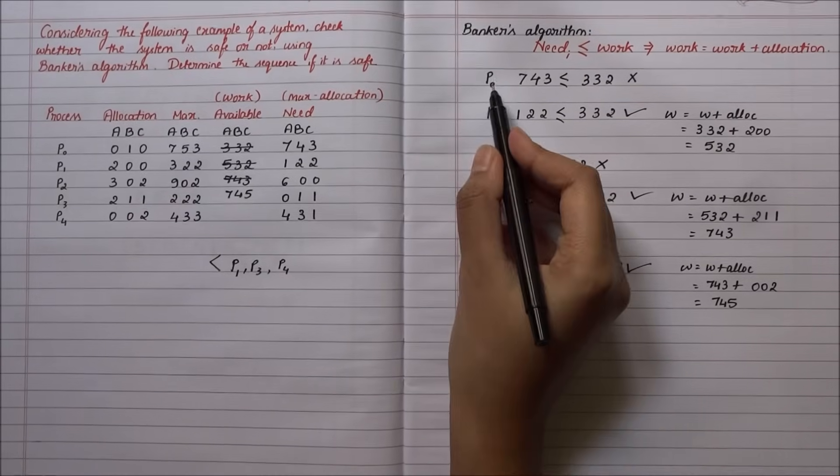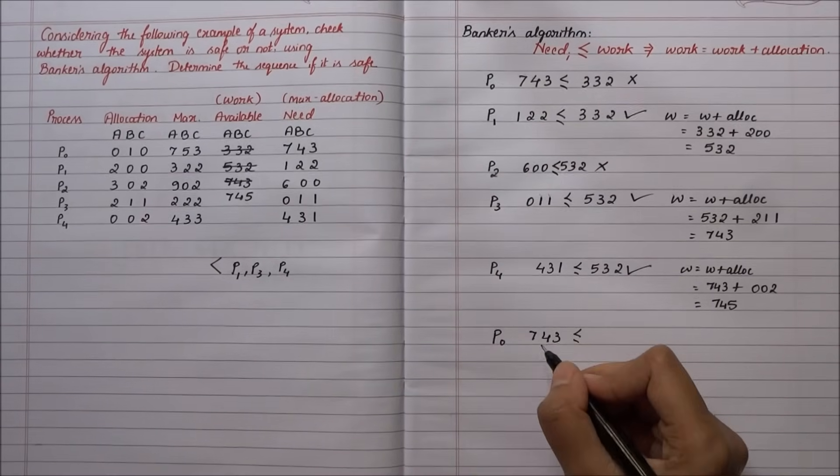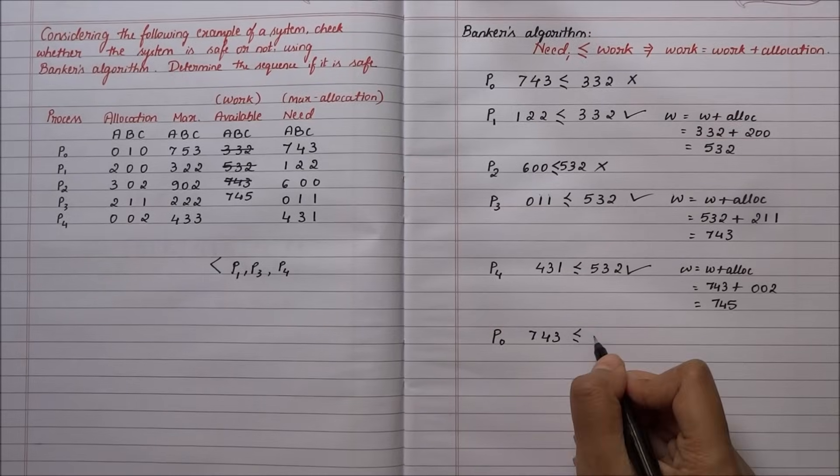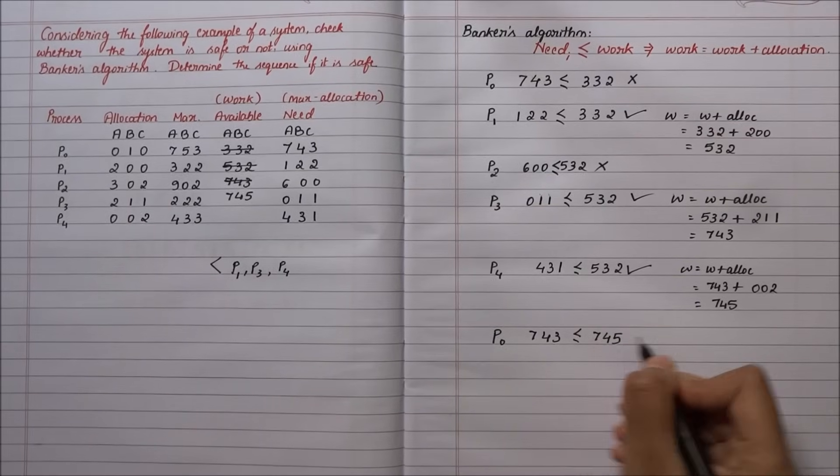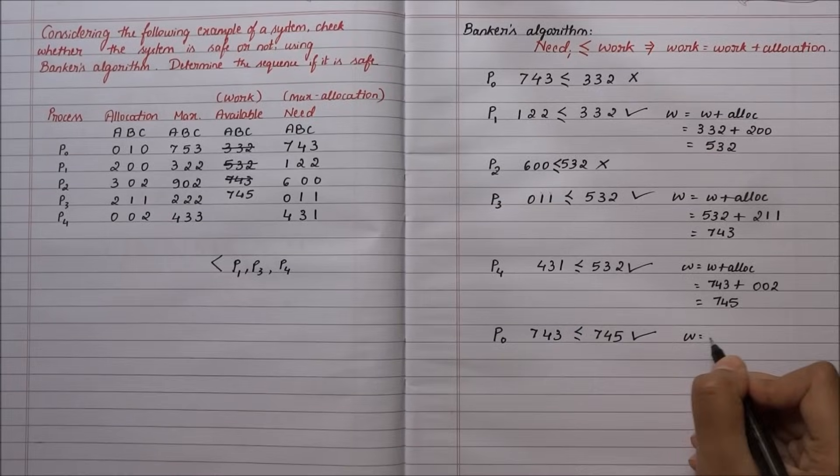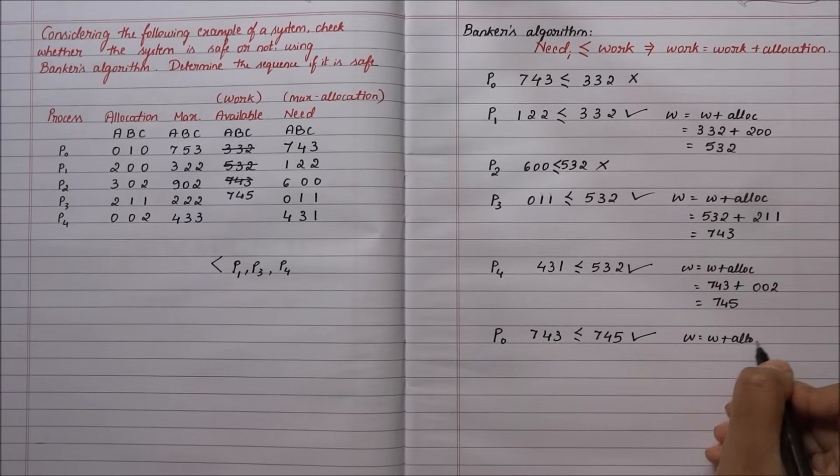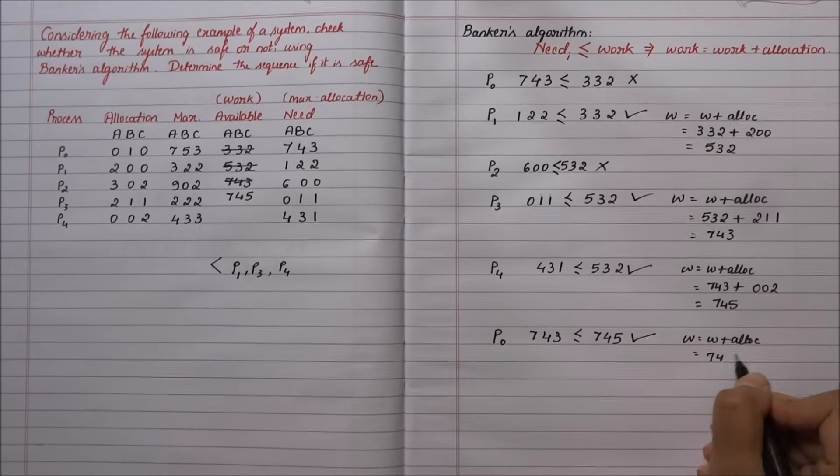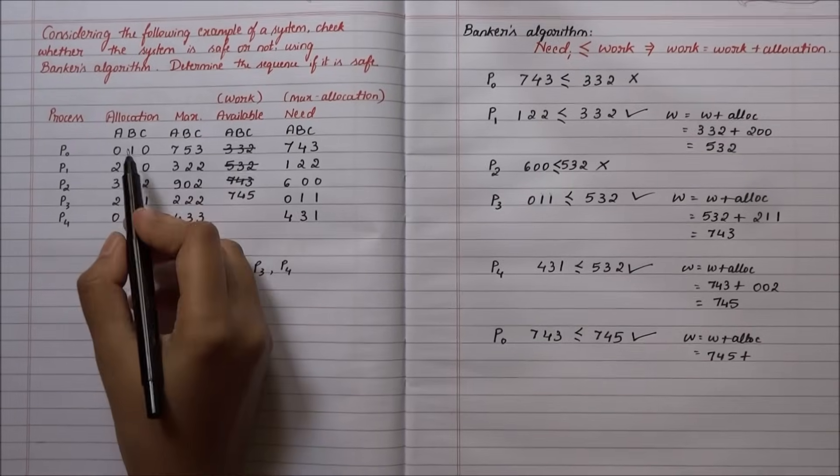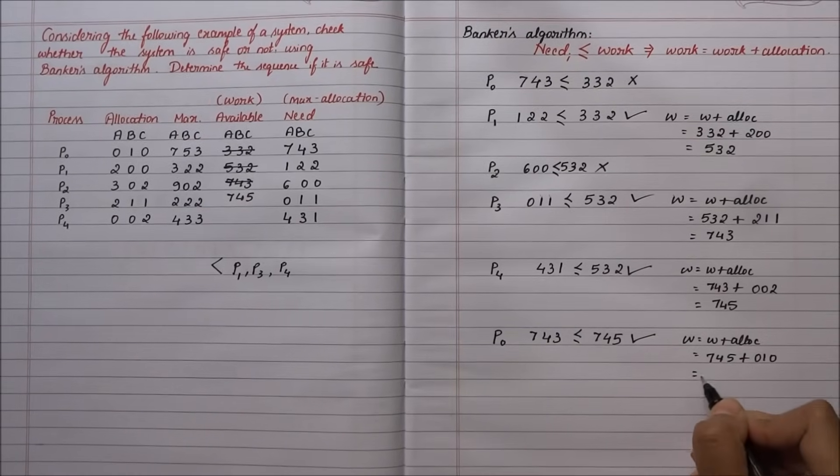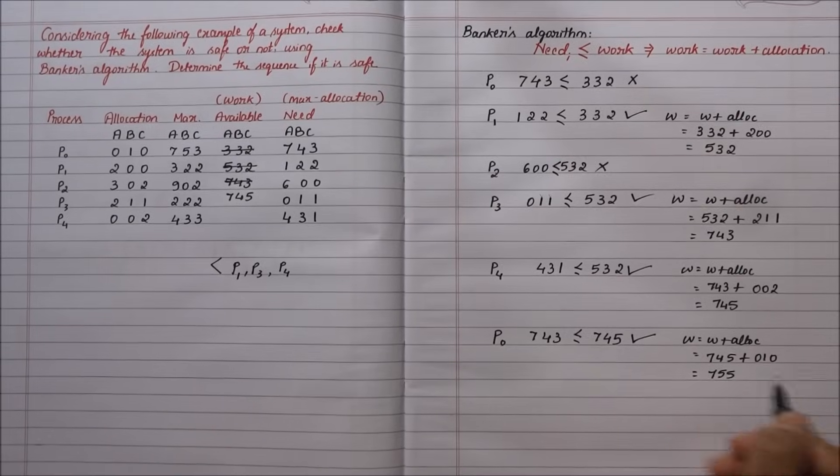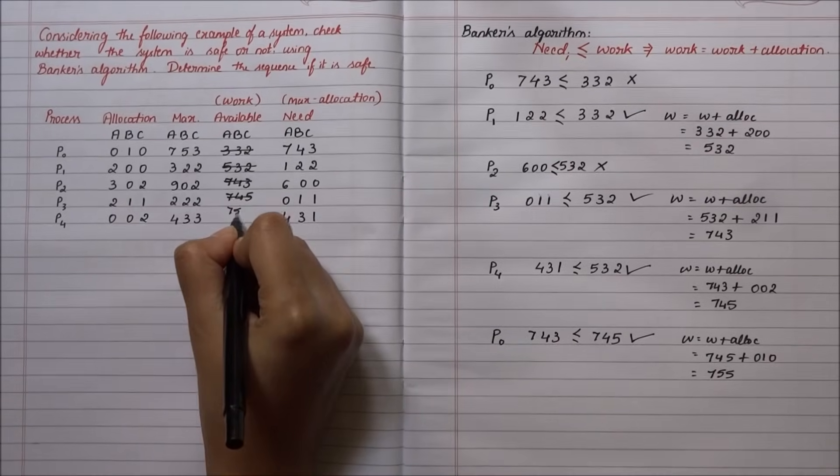Now going back to P0. P0 has need of 7-4-3, less than or equal to 7-4-5. This is now true. Work equals work plus allocation: 7-4-5 plus allocation of P0, which is 0-1-0, totals 7-5-5. P0 has now entered the safe sequence.